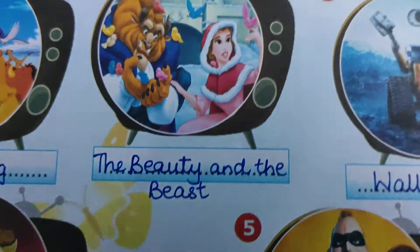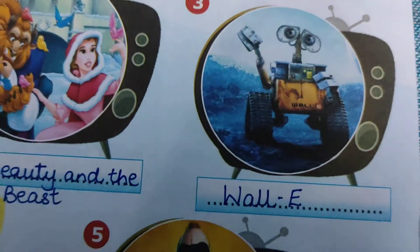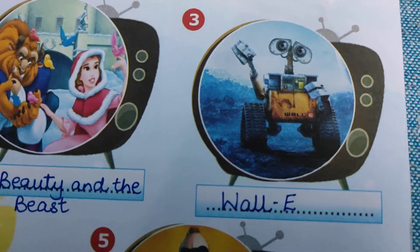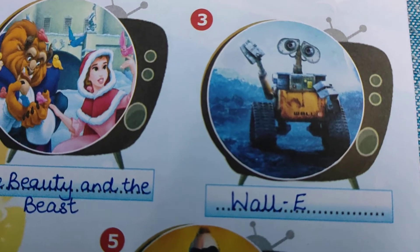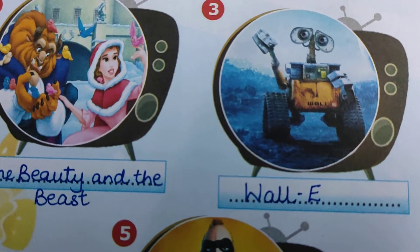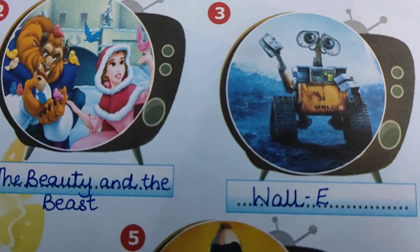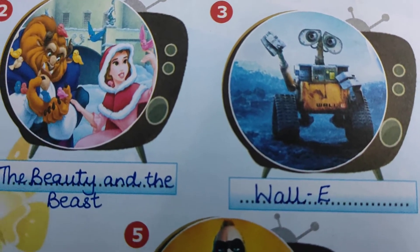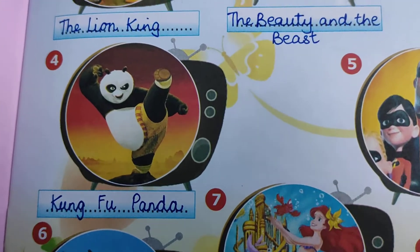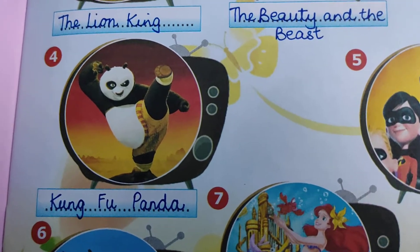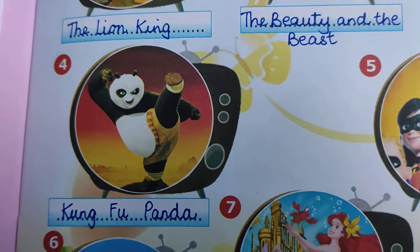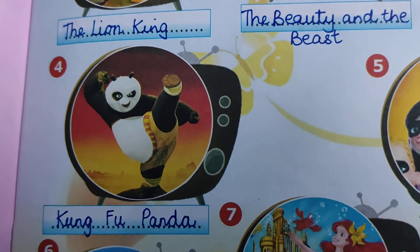Coming on to the third one — this is a robotic character, and the name of this movie is Wall-E. I hope you must have seen these movies. If you haven't seen them, you should watch them. The fourth one — I am sure this must be the favorite of many of you — Kung Fu Panda.